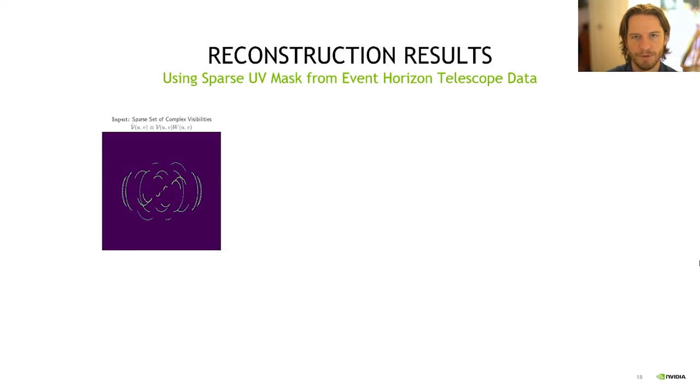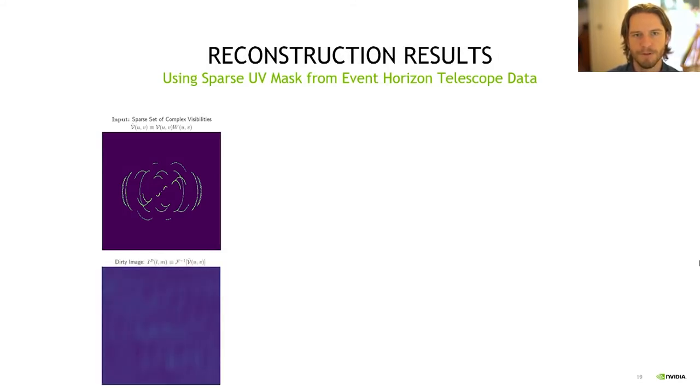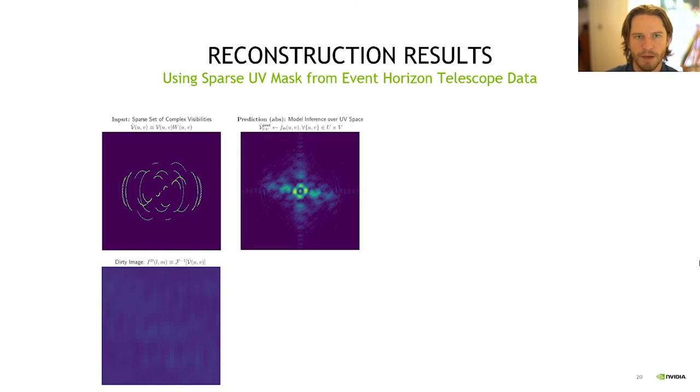Here, we're using the actual UV mask from the event horizon telescope data. The corresponding dirty image, the inverse Fourier transform of the visibilities, contains very little information about the ground truth signal. Our neural prediction, however, can be arbitrarily dense as we like, providing us with an inverse Fourier transform that well recovers the observation in the spatial domain.